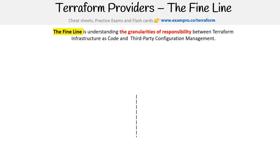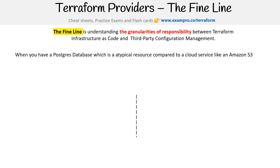Let's talk about the fine line — understanding the gray areas of responsibility between Terraform infrastructure as code and third-party configuration management tools like Ansible. There are cases where, when you get outside of AWS, Azure, or GCP, you might see providers like for Postgres database.